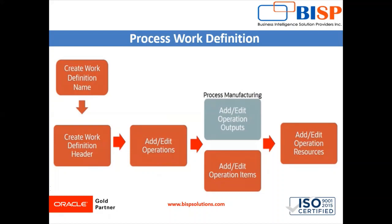First of all we have to create the work definition name, and later on we have to create the work definition header. We can then add and edit the operations, so we will add some operations in the process work definition. After that we will add some outputs and inputs in our process manufacturing, and at the end we can add the process resources in our work definition.